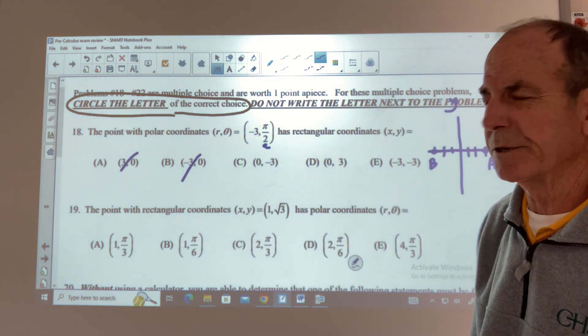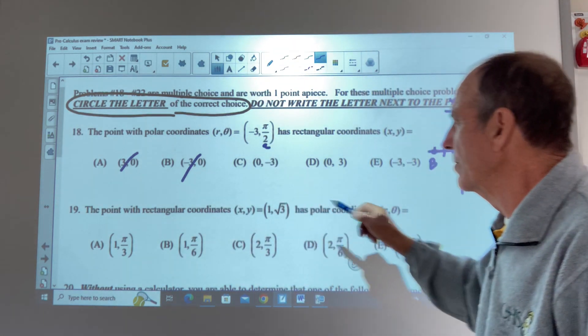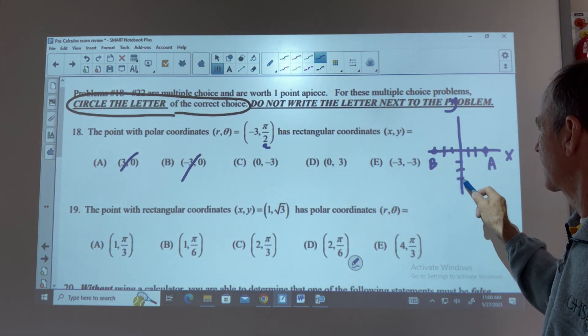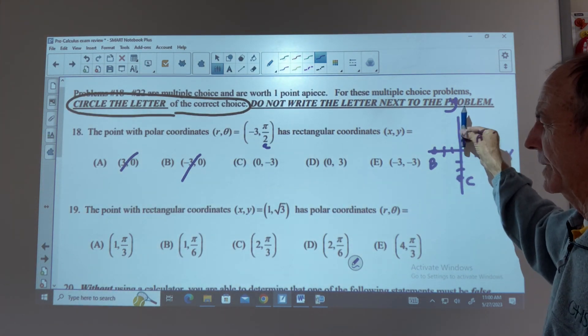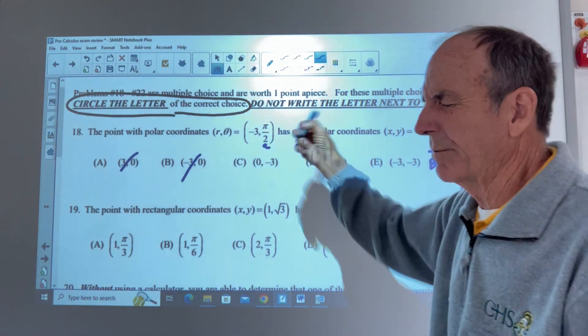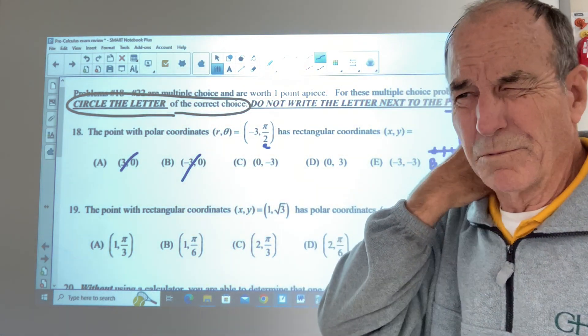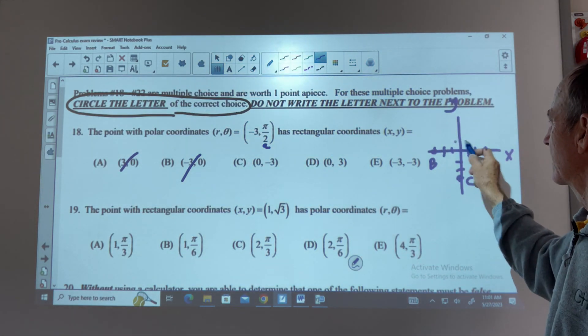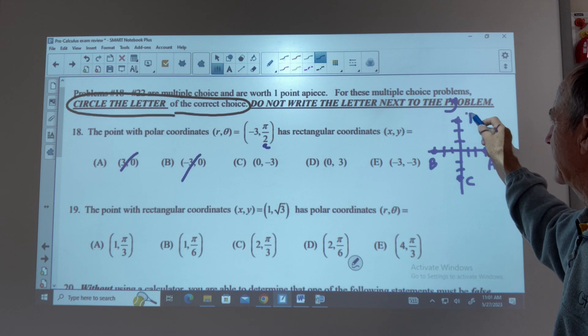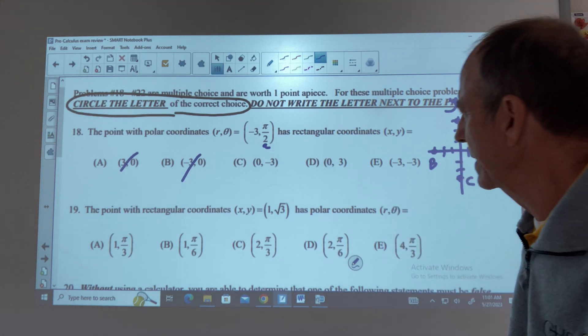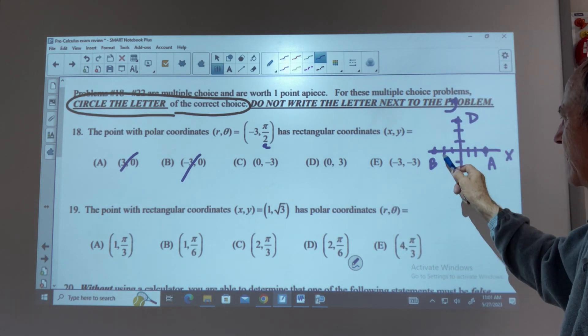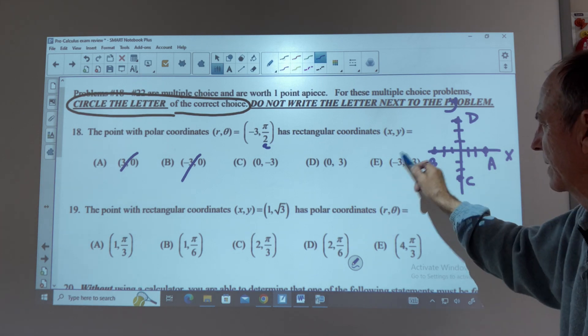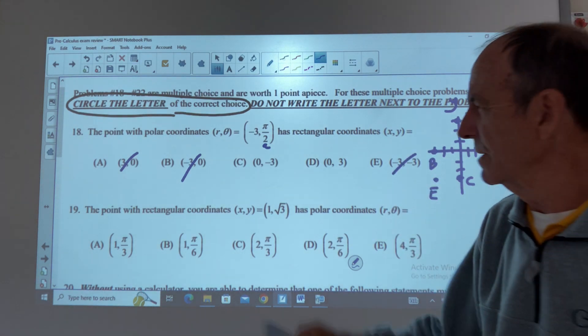And again, we're looking for an angle of pi over 2. So 0, negative 3 is down here. This is C. Well, pi over 2 is going up. We have a negative 3 here, which might be relevant. This is 0, 3. So this is point D. And then point E is negative 3 and negative 3, which is down here. And that's probably just out of consideration completely. So we have these two choices left.